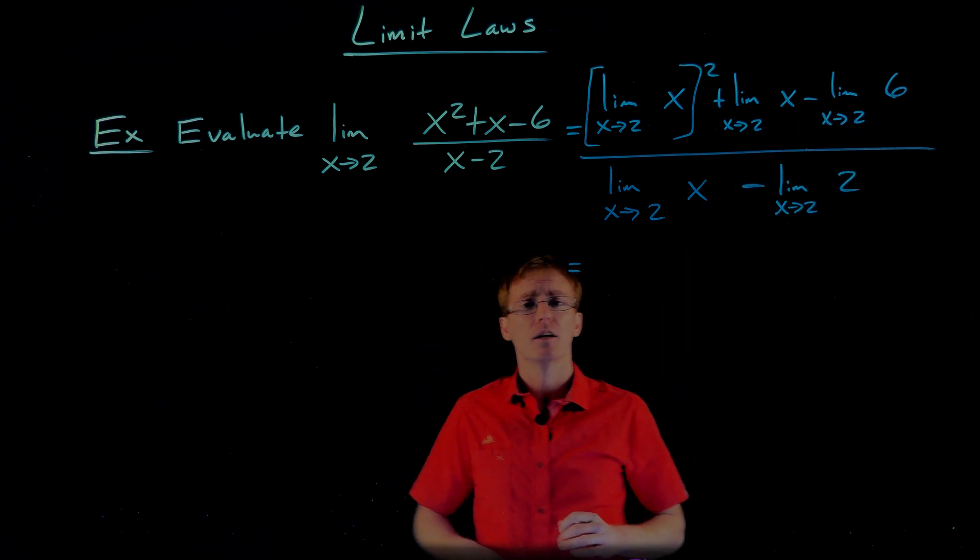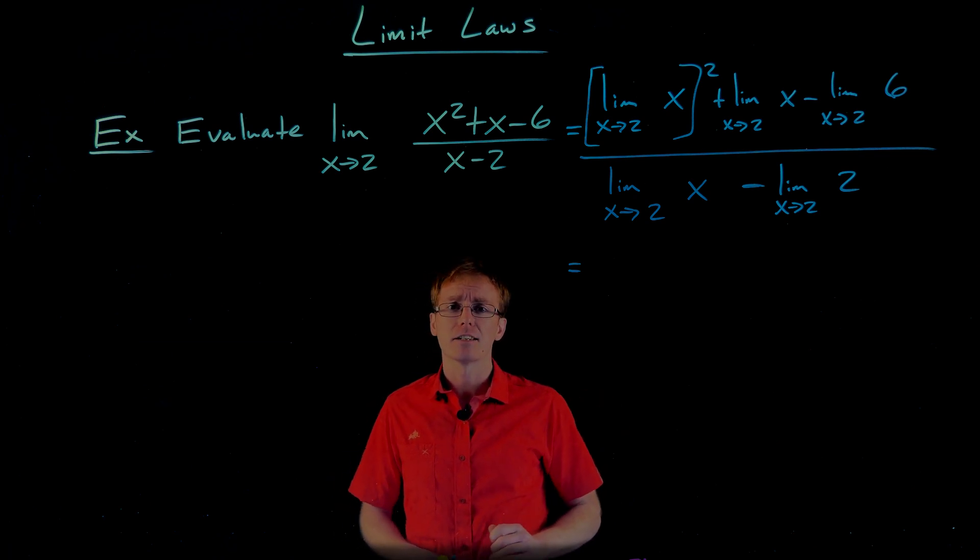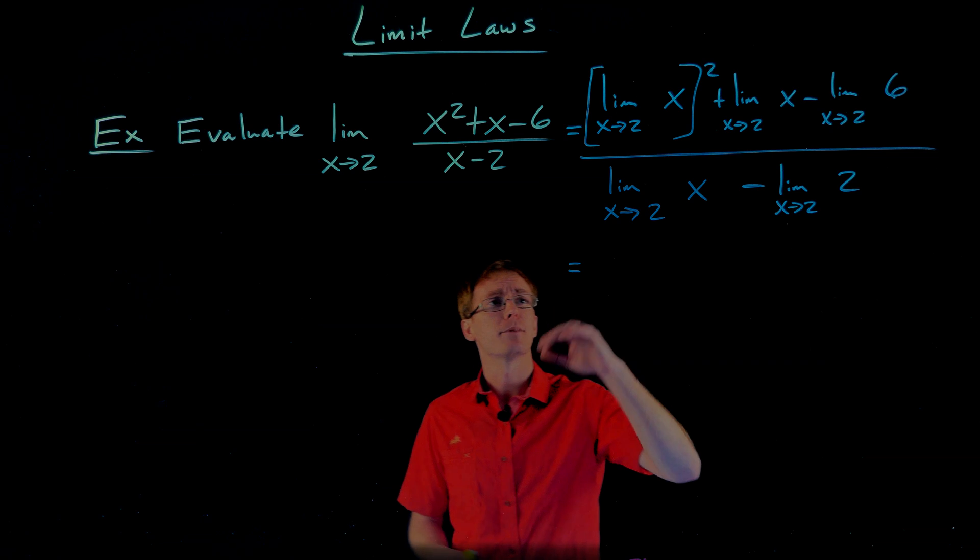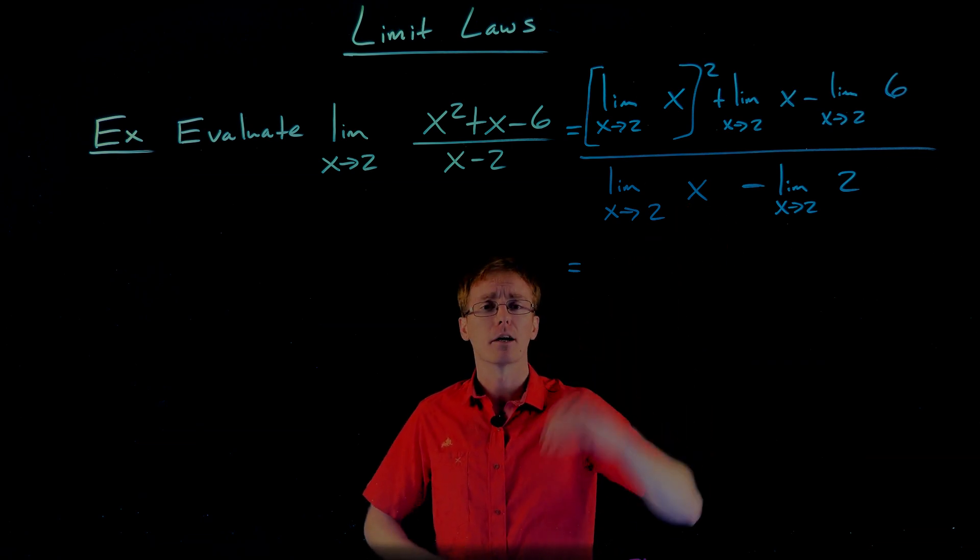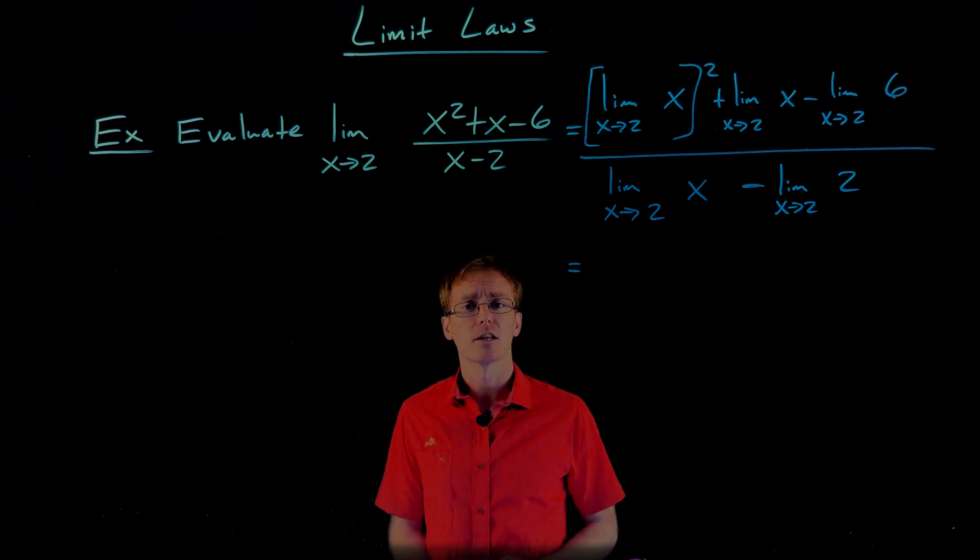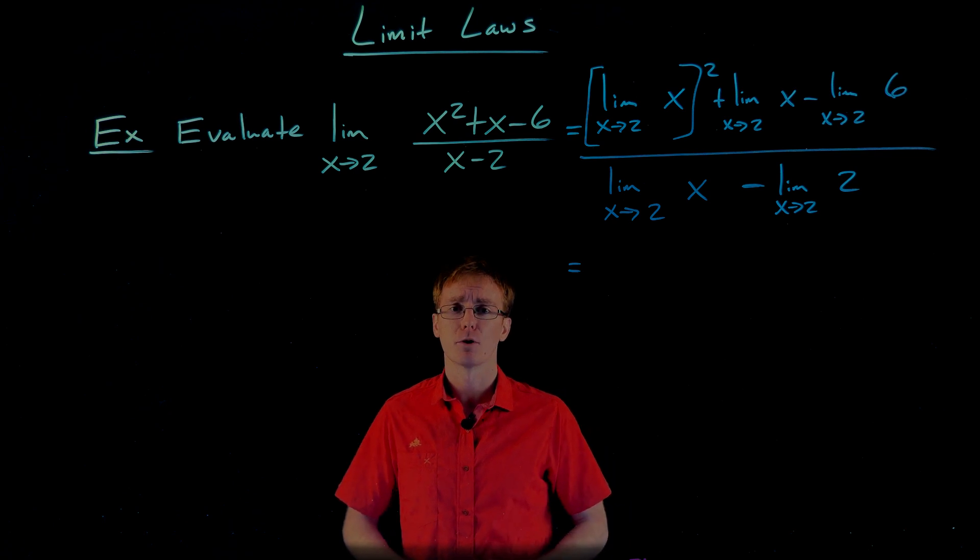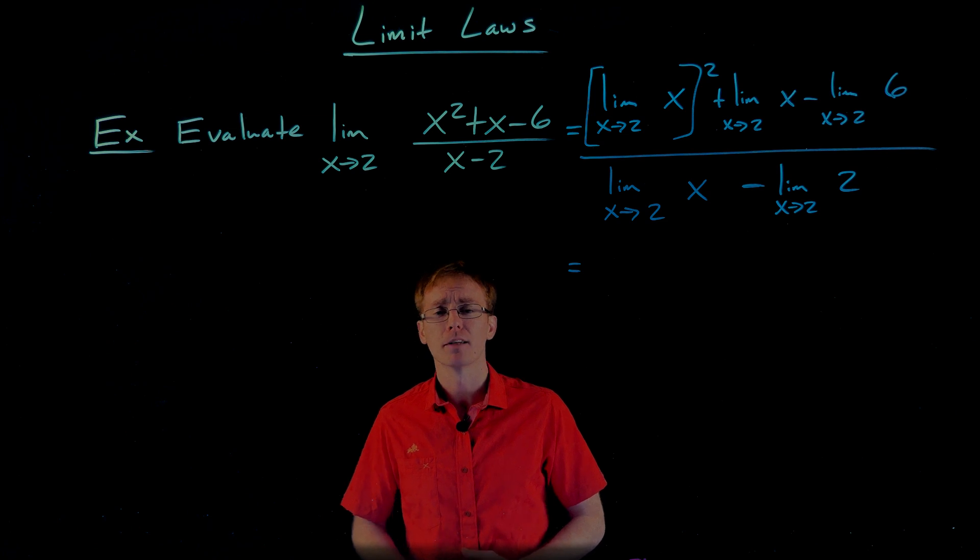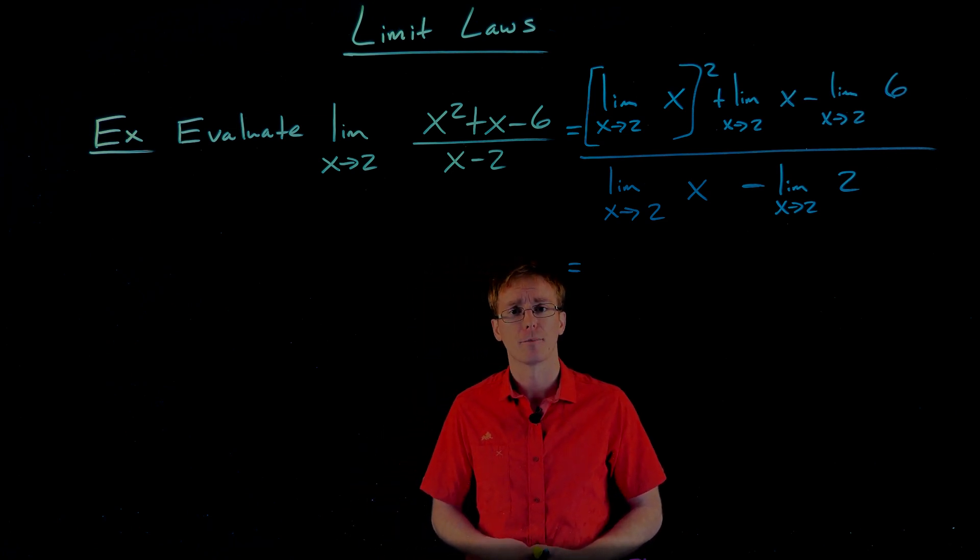And after doing that, every limit in the numerator is now either the limit of that particular function x or some constant function, in this case 6. So after breaking it down like this, we'll be able to basically just plug x equals 2 in. And we do the same thing for the denominator. That one's a bit quicker and simpler. We break it up as the limit of the first term, the limit as x approaches 2 of x, and the limit as x approaches 2 of the constant 2 is what we have to subtract away from that.